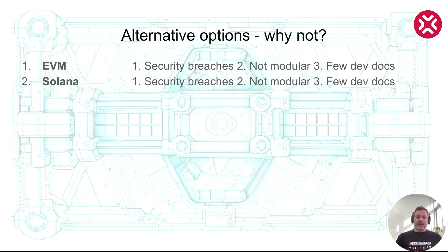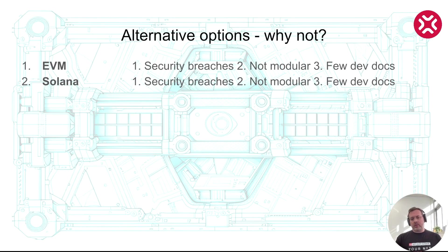Another platform we studied was Solana, which is written in Rust. However, we figured that the maximum number of validators can be seven at a time. We tried changing the code of the nodes but didn't manage to get to a number higher than seven. Besides, we learned about multiple security breaches. Also, the code isn't modular and there isn't much developer documentation for the nodes. So we discarded this idea.